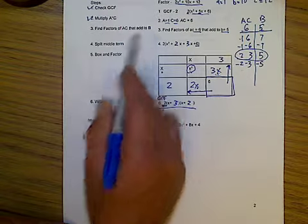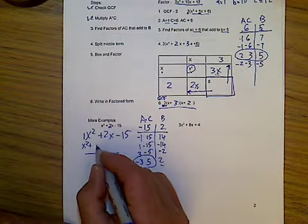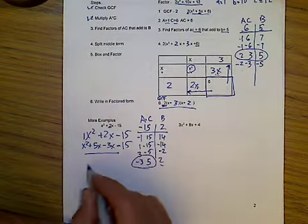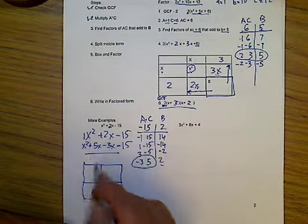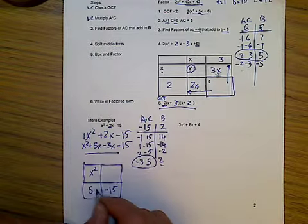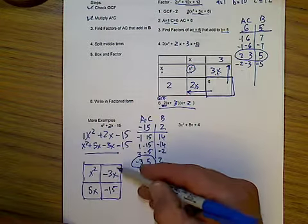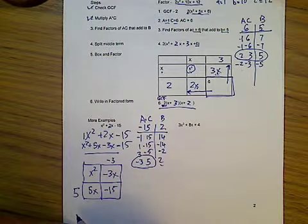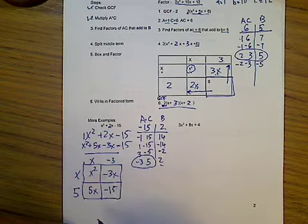So now I'm going to box and factor. I'm going to split the middle term: x² + 5x - 3x - 15. And now I'm going to make my little box. And I always put the x² in this first one. I put the constant term in this last one. And then I put the other 2 wherever I want. Now what's common in this direction would be a negative 3, and this direction would be 5, and this direction would be x, and this direction would be x also.